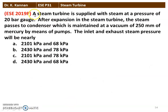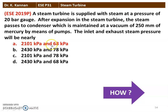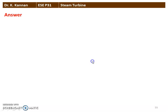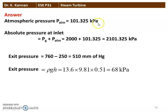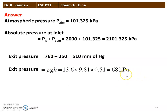The next question from the 2019 question paper — a steam turbine is supplied with steam at a pressure of 20 bar gauge. After expansion the steam passes to a condenser maintained at 250 mm of mercury vacuum by a pump. The inlet and exhaust pressures are 2101 kPa and 68 kPa respectively. Atmospheric pressure = 101.325 kPa. Absolute inlet pressure = 2000 + 101.325 = 2101.325 kPa. Exit pressure: 760 − 250 = 510 mm Hg = ρgh = 13.6 × 9.81 × 0.51 = 68 kPa.